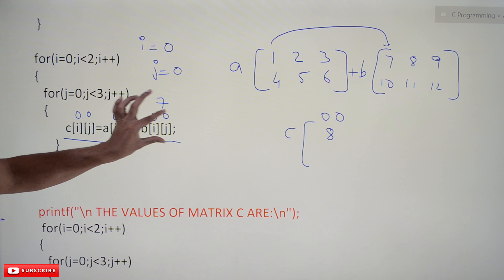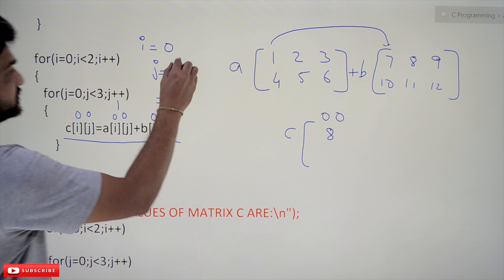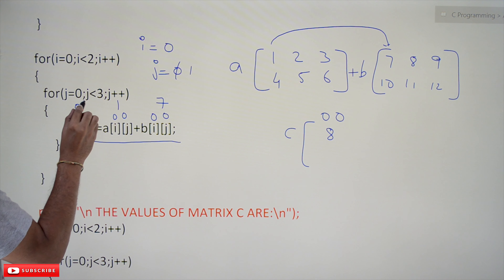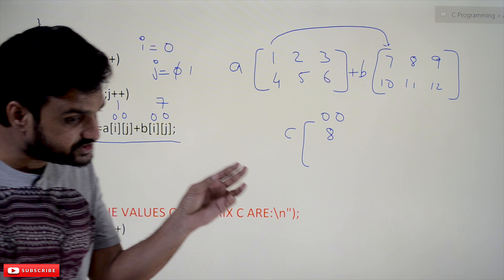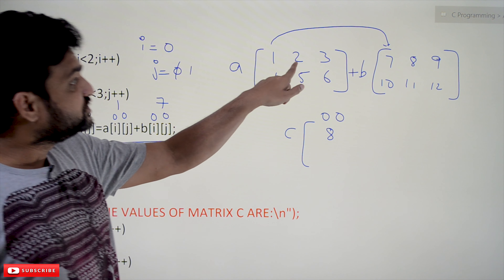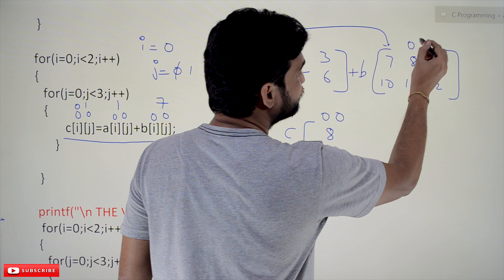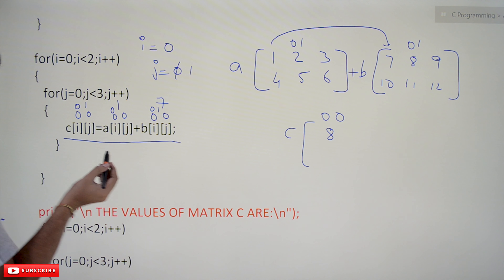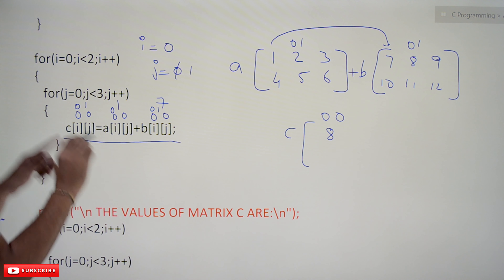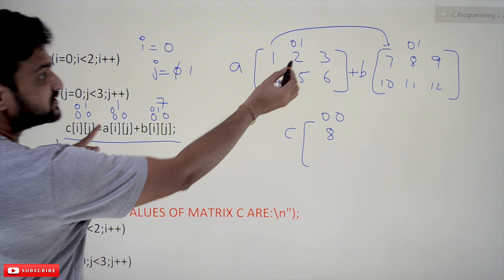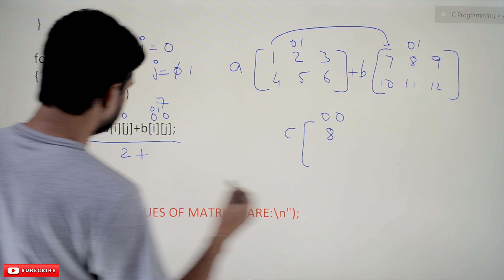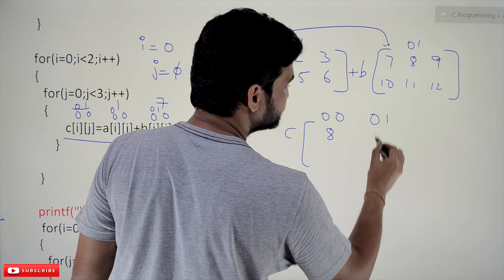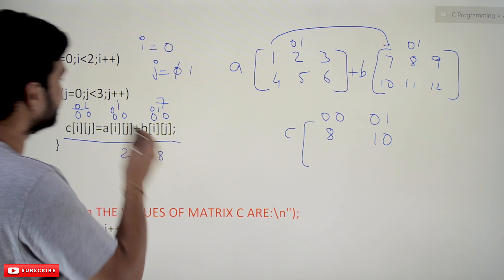In the next iteration, j equals 1. Now we compute C[0][1] = A[0][1] + B[0][1]. The i value is 0 and j value is 1. A[0][1] is 2 and B[0][1] is 8, so 2 + 8 = 10, which gets stored in C[0][1].